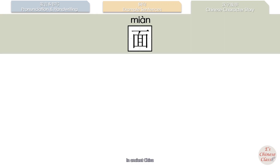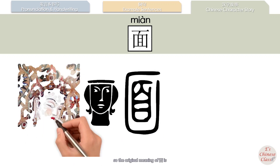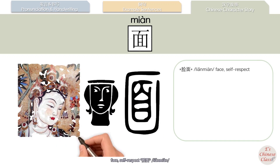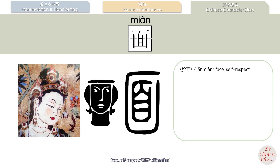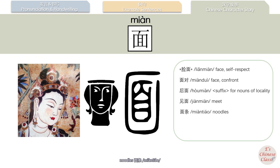In ancient China, 面 was written as a character referring to your face. So the original meaning of 面 is face — self-respect (liǎn miàn), face/confront (miàn duì). The extended meanings include: suffix for nouns of locality (后面, hòu miàn), meet (见面, jiàn miàn), noodles (面条, miàn tiáo), aspect (方面, fāng miàn), and surface (表面, biǎo miàn).